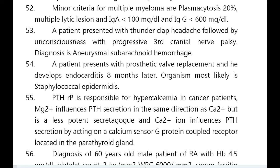Magnesium influences PTH secretion in the same direction as calcium but is a less potent secretagogue. Calcium ion influences PTH secretion by acting on a calcium-sensing G-protein coupled receptor located in the parathyroid gland.